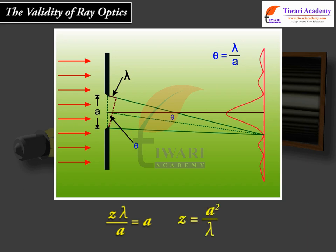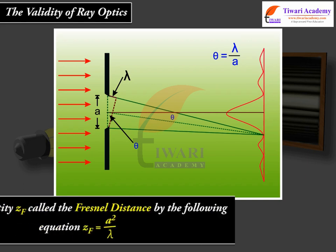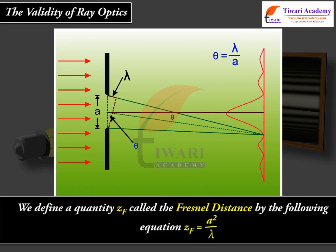Therefore, z equal to A square upon lambda. We define a quantity zf called the Fresnel distance by the following equation: zf equal to A square upon lambda.